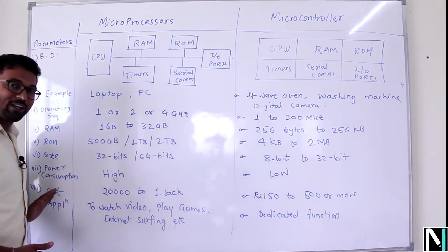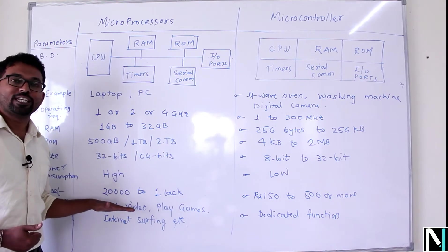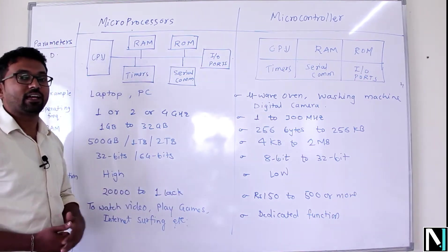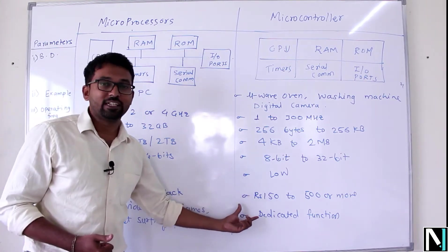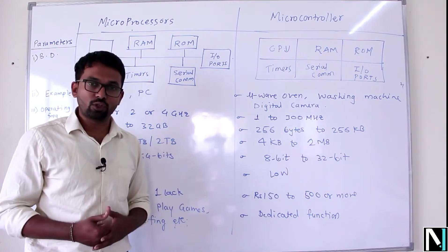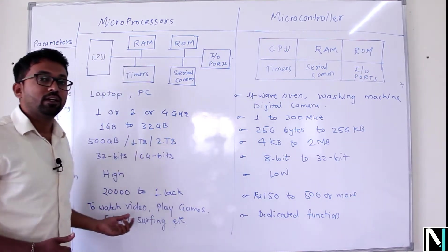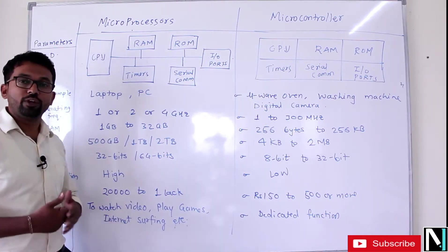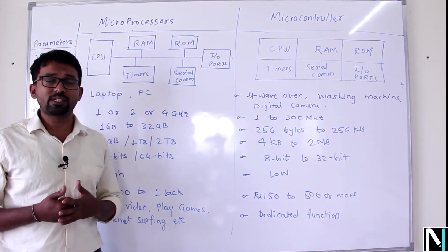Cost is a very important factor. For microprocessor based systems, cost ranges from ₹20,000 to almost ₹1,00,000, whereas microcontrollers are very affordable — just ₹150 to almost ₹500 or more, depending on the application.